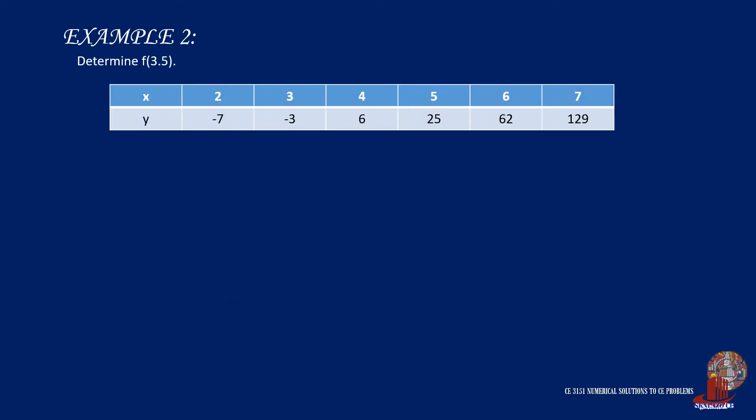Let's analyze example 2. We are to determine y if x is 3.5 given the following dataset. With the same start, place x and y into the first two columns and work on the difference table.